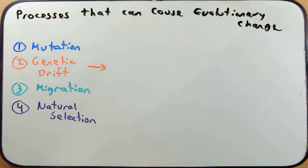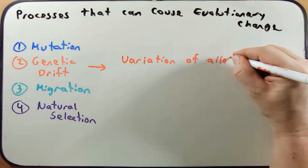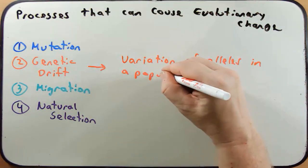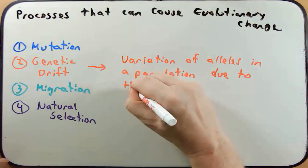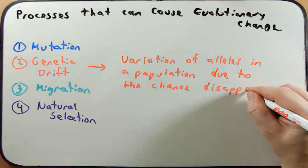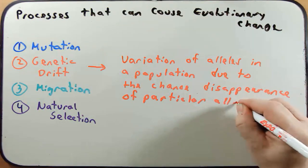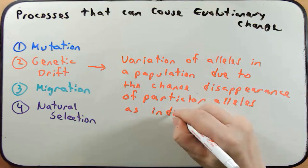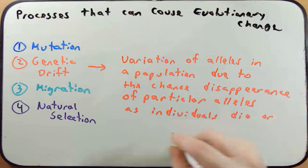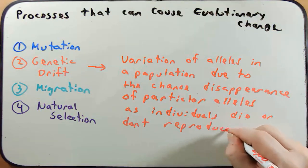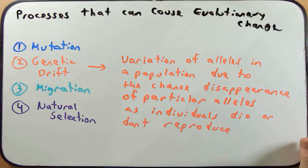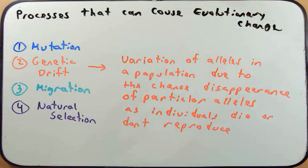Genetic drift is variation of alleles in a population due to the chance disappearance of particular alleles as individuals die or don't reproduce. Natural disasters — earthquakes, floods, fires — can remove a portion of the population, and when that happens, you change the variation of alleles and the proportion of certain alleles in that population because those individuals have died off.